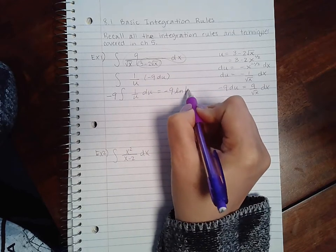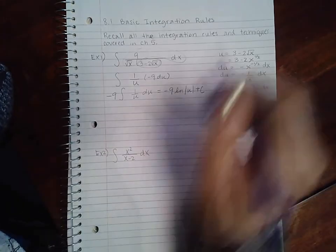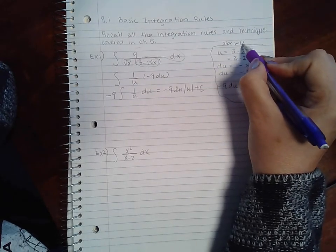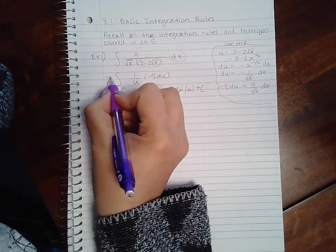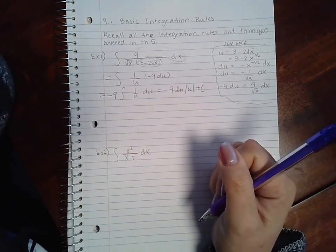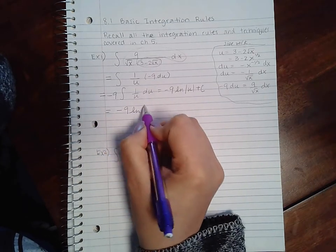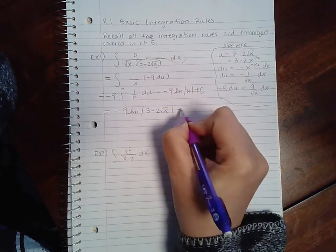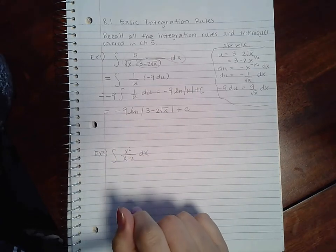Which is actually the ln of the absolute value of u plus c, of course. Now, remember to state that this is side work so that we know it's helping you to solve this problem, but it isn't part of the actual statements. And you do have to say that this line is equivalent to that one so we understand the relevance of what that line is doing there. Now I do need a back-sub, so u was 3 minus 2 square root of x. And since this quantity is not always positive, we do need to keep those absolute value bars there.